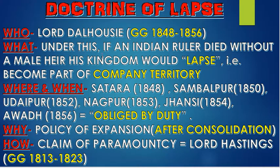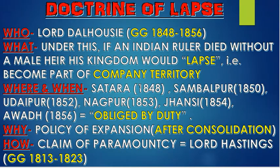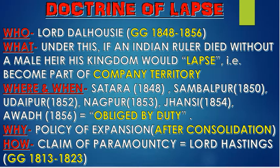The doctrine of lapse was introduced by Lord Dalhousie. To understand it, remember Rani Lakshmibai: if there was no male heir in a kingdom, the kingdom would automatically lapse and become company territory. Rani Lakshmibai wanted to save her son because his death would mean the kingdom would be lapsed. The states affected can be remembered by the mnemonic SSUNJ — Satara, Sambalpur, Udaypur, Nagpur, and Jhansi.